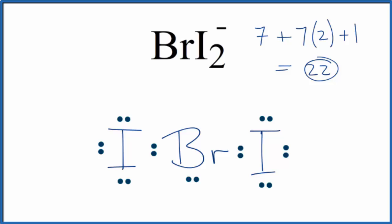Elements in period 3 and below can have more than 8 valence electrons, an expanded octet. Bromine can have an expanded octet. So we'll put these electrons here on the bromine. This is our Lewis structure for BrI2-.